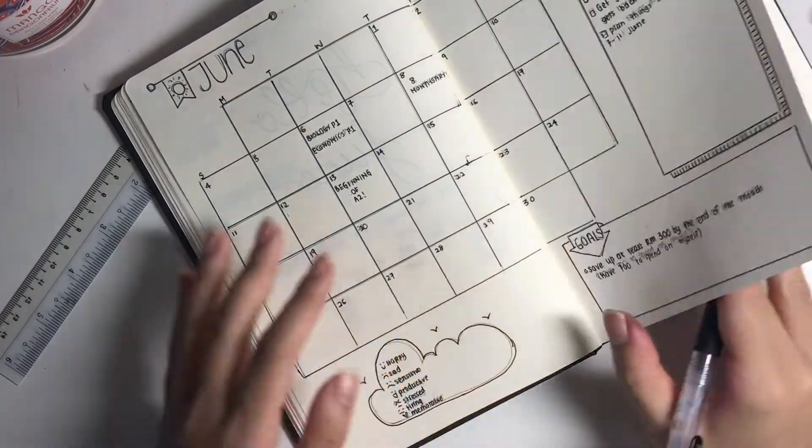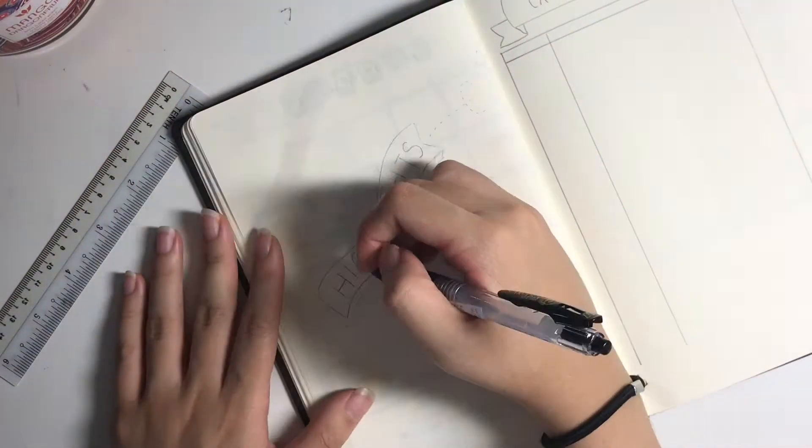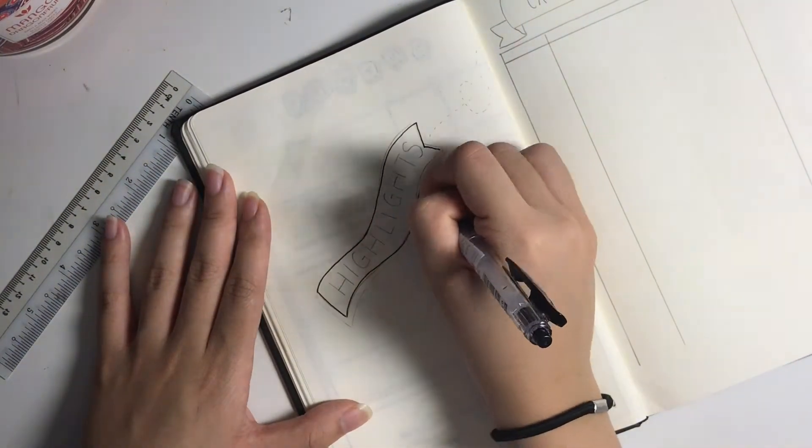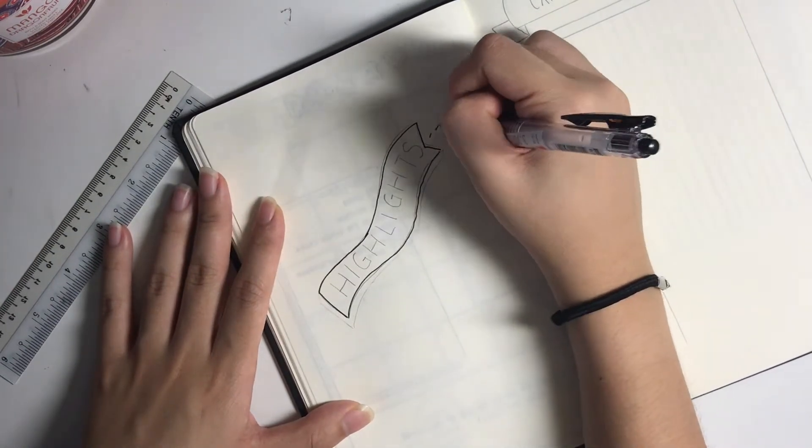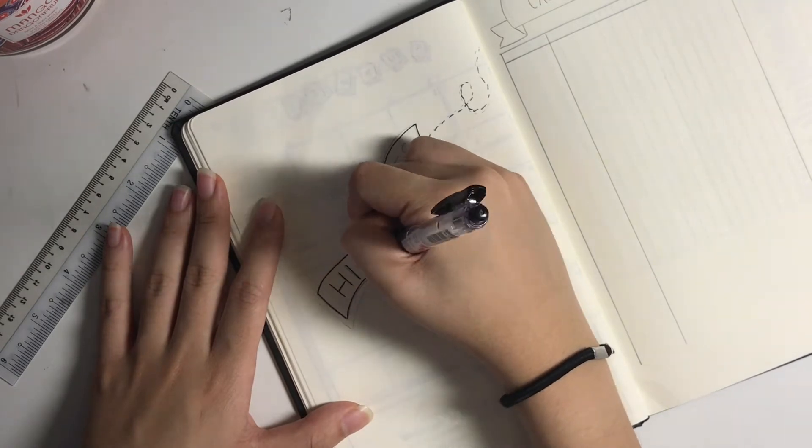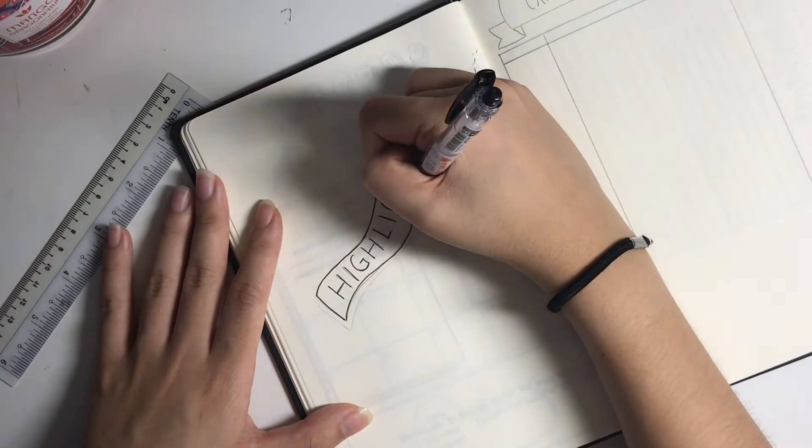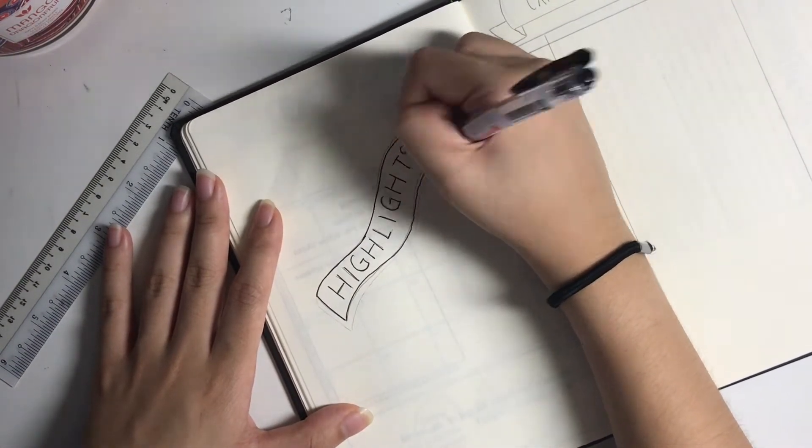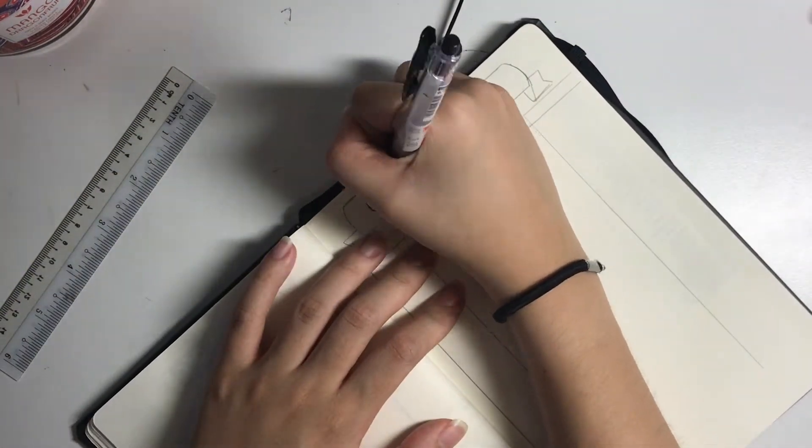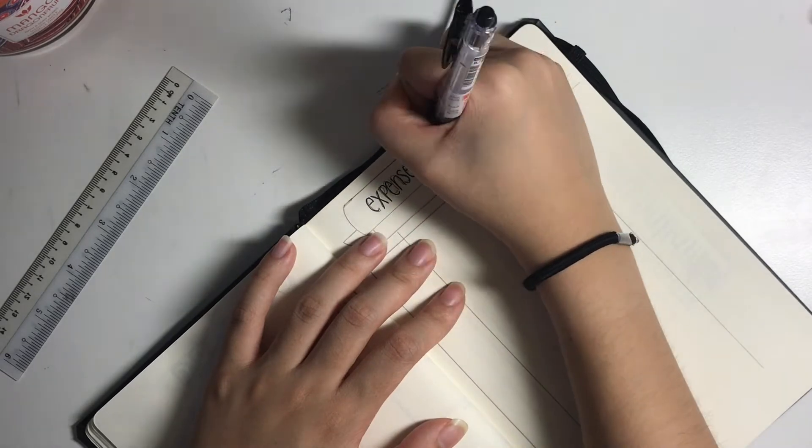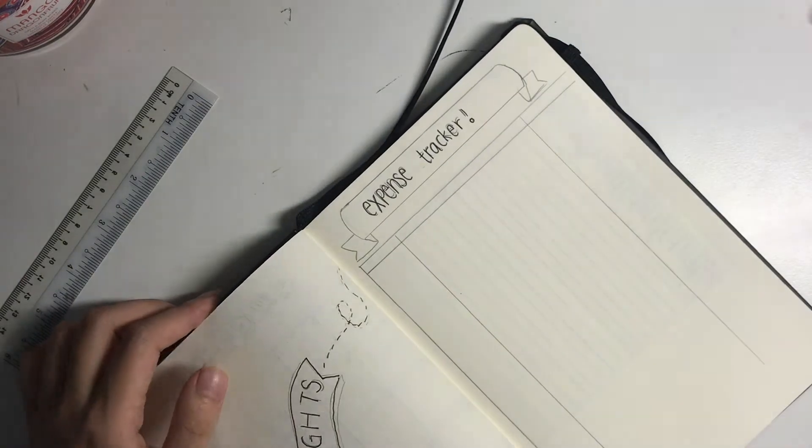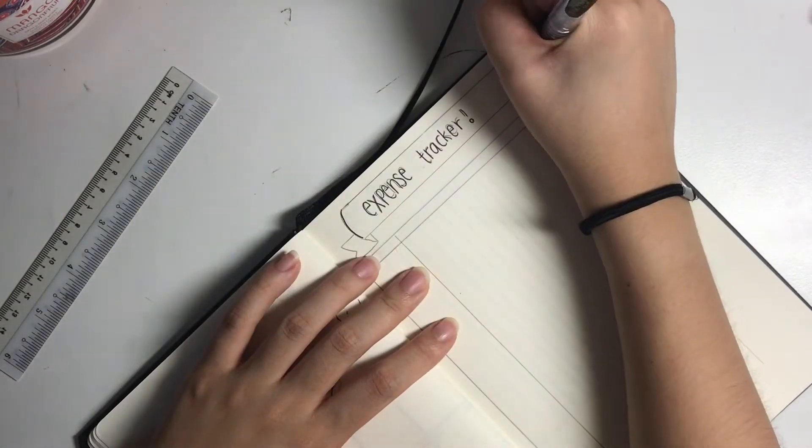So that was the first small change I made. The second was I dedicated a whole page to my highlights. Instead of, if you flip back to my May setup, I just had a little section for highlights. I didn't write much in it because there wasn't much space, so I decided a whole page would be nice. So if I have any sort of pictures I like to print out and stick in I could, because I have a whole page, or any quotes, anything funny and memorable, I could just jot it all down on that page.